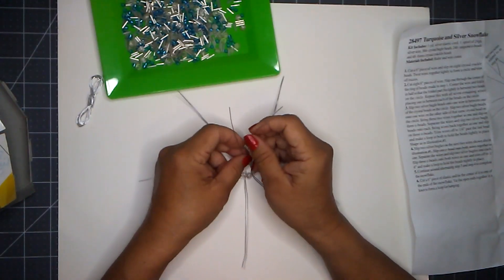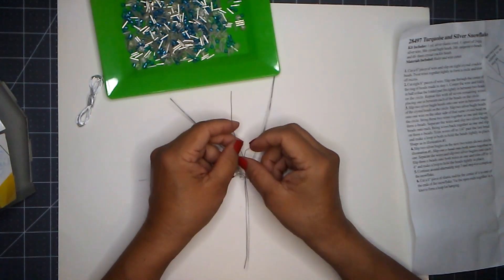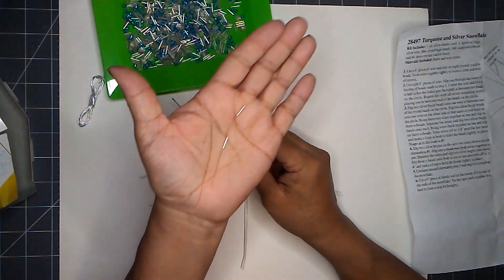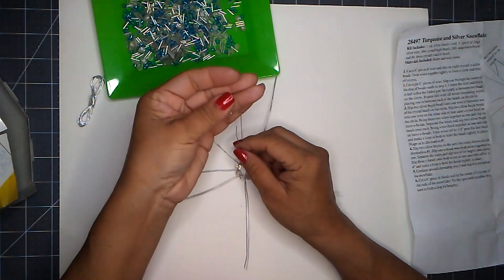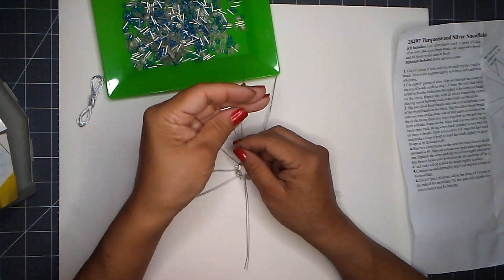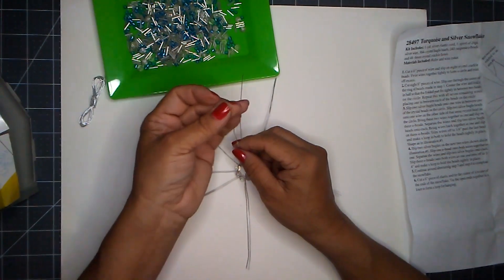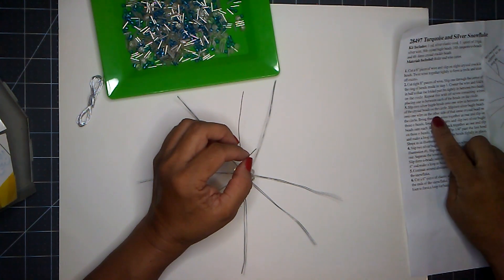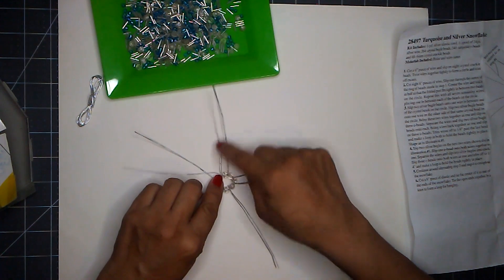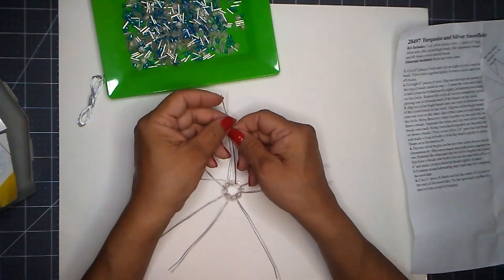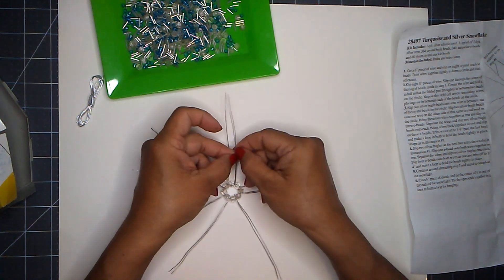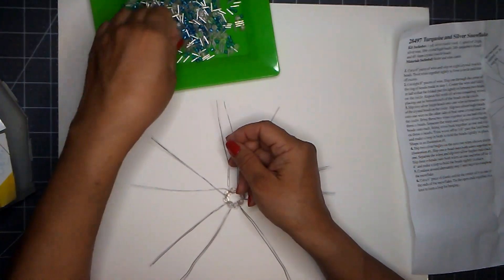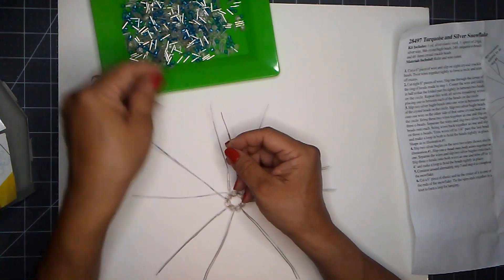Now it says step three. I'm going to take one of these wires, slip two silver bugle beads onto one wire in between one of the crystal beads on the circle. And that's these, these long tubey things. Slip two silver bugle beads onto the wire on the other side. So I have my bead here, I got this wire here, and then I need to come over here because I'm looking at the picture. I need to separate.